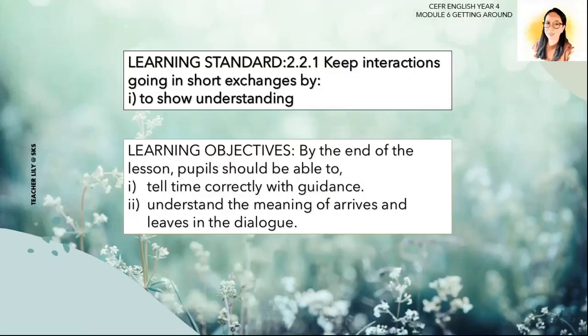The learning standard for this lesson is 2.2.1, to keep interactions going in short exchanges by showing understanding. The learning objectives are: by the end of the lesson, students should be able to tell time correctly with guidance, and understand the meaning of 'arrives' and 'leaves' in the dialogue.